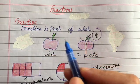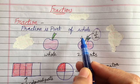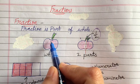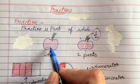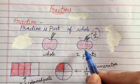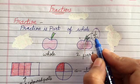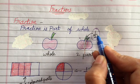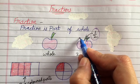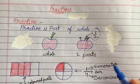A fraction is part of a whole — you have already studied this in your previous classes. For example, if we have an apple and we cut it into 2 pieces, the total number of pieces are 2, and if I give 1 piece to you, so the fraction is 1 upon 2.